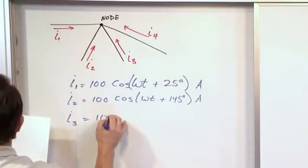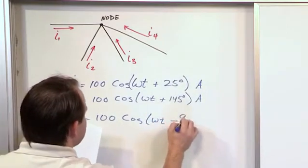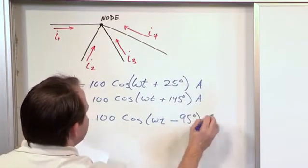And I3 is 100 cosine omega t minus 95 degrees, and that's in amps.